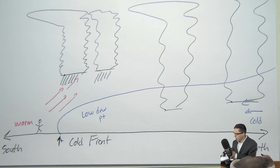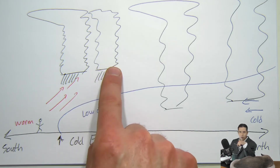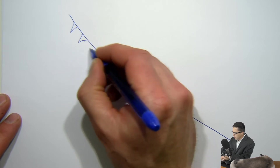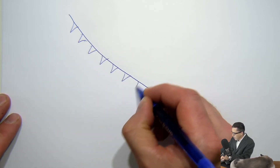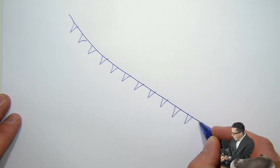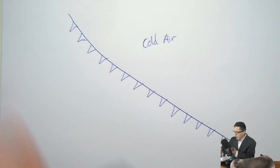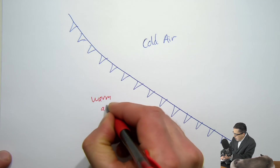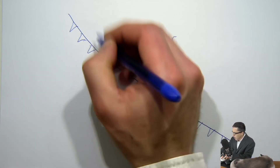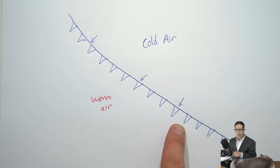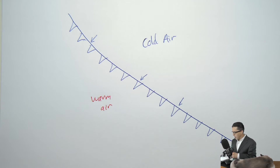On a map, a cold front is shown in blue as a line with triangular teeth. The triangular teeth indicate a cold front — the cold air is behind the teeth and the warm air is on the other side. The cold air moves in the direction the teeth are pointing. A memory trick: cold air is 'biting cold,' which is why the cold front has teeth.